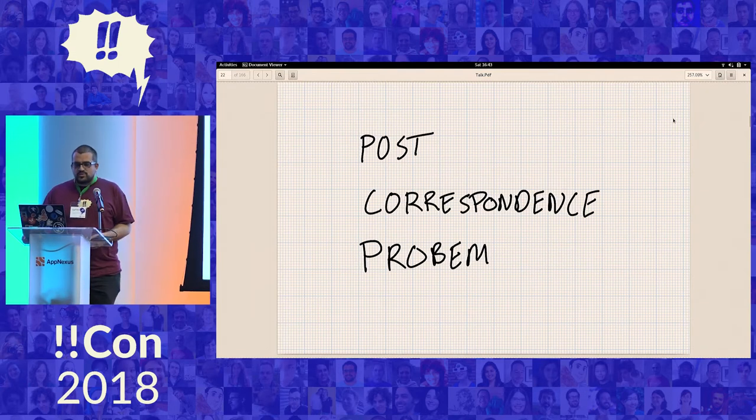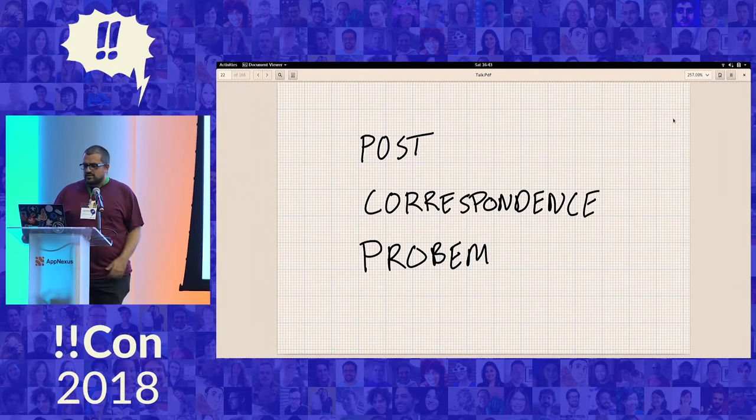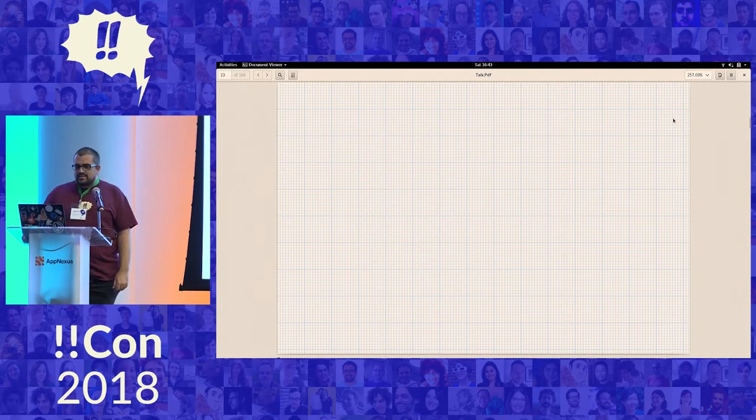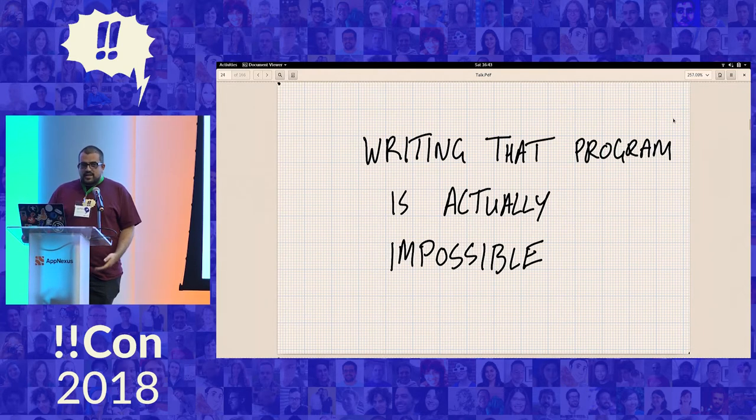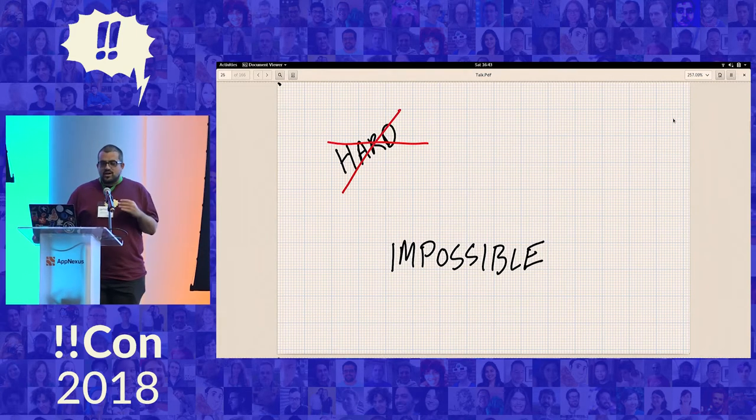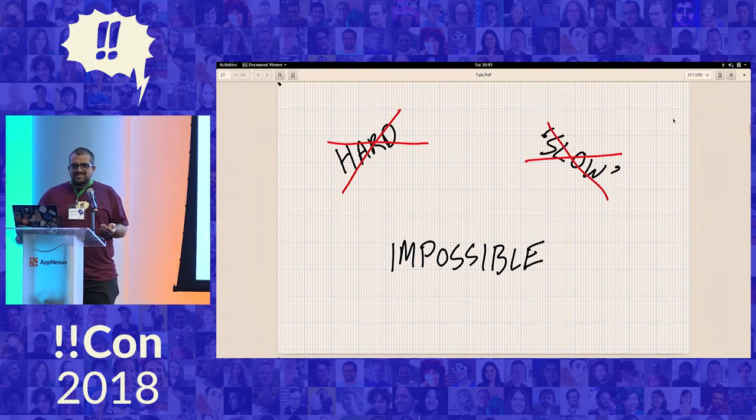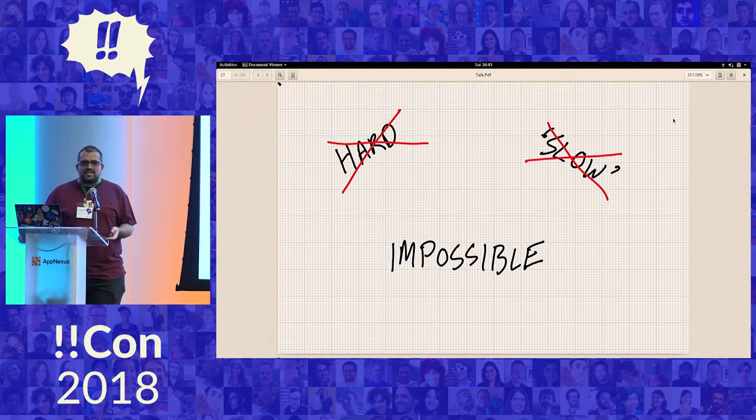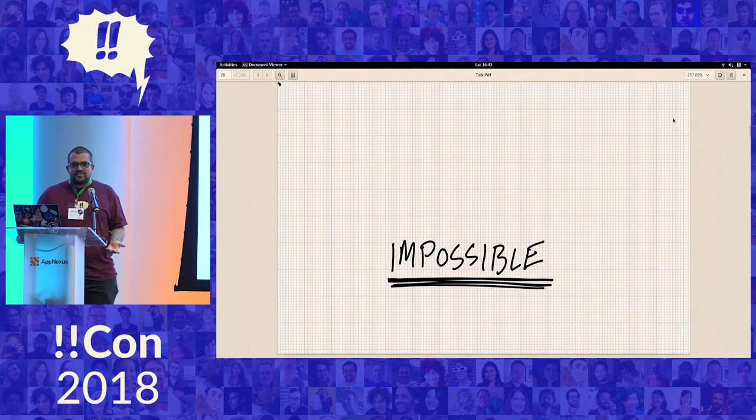And this is called the Post Correspondence Problem, named after someone called Emil Post from a long, long time ago. And like I said, writing this program is actually impossible. I mean impossible, like not hard, not slow, or NP complete, or it'll be like a pain. I just mean impossible.